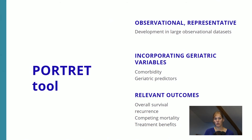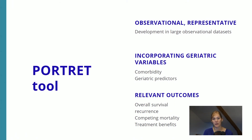We therefore decided to develop a new tool to really improve predicted outcomes of treatment in older adults specifically. For this, we used large observational and representative data from the Dutch Cancer Registry, and we wanted to incorporate geriatric variables — not only comorbidity, which is an important predictor, but also geriatric predictors such as functional impairments, use of hearing aids, and polypharmacy. The PORTRAIT tool aims to predict relevant outcomes for this population, including survival, recurrence, competing mortality, and expected treatment benefits.